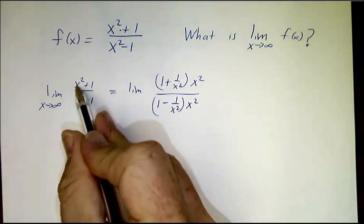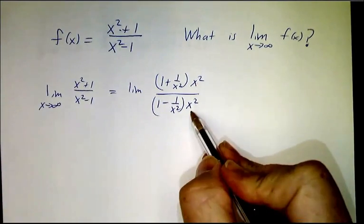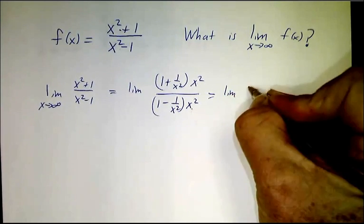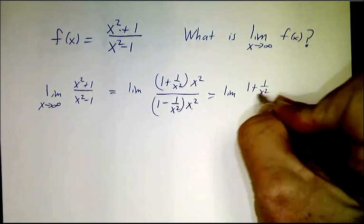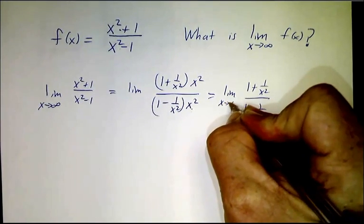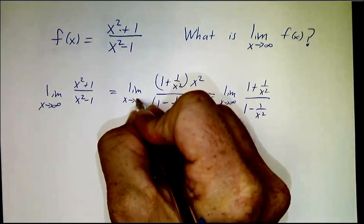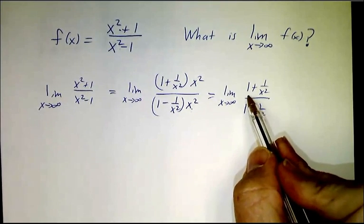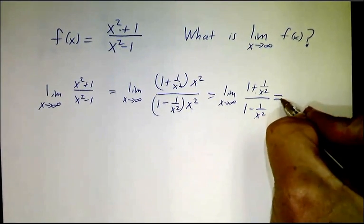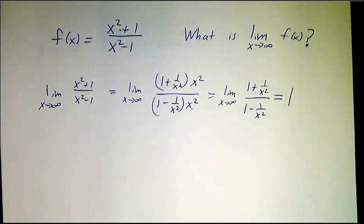See, they both blow up like x squared, so we factor out an x squared from both of them. And that's the limit of 1 plus 1 over x squared over 1 minus 1 over x squared. And that's easy because when x gets very big, this is close to 1. This is close to 1. The ratio is close to 1 and so the limit is 1.